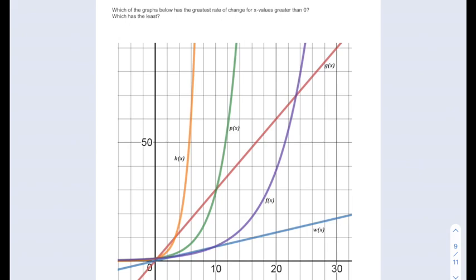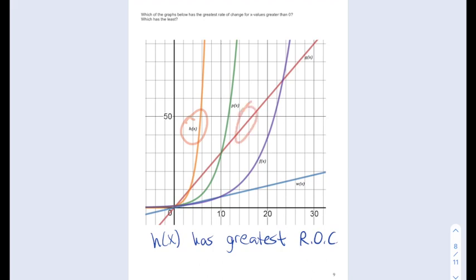Now this next problem gives us several different models, some linear and some exponential, and asks us which has the greatest rate of change and which has the least rate of change. Well remember, exponentials start low and slow and then spike, so eventually they always have the greatest rate of change. Out of the three exponentials that we're seeing here, h of x spikes the earliest, meaning it has the greatest rate of change. The linears always end up getting caught up to since they grow at a constant rate. This particular linear is the lowest at the end of the graph, so therefore it has the lowest rate of change, or the least rate of change.